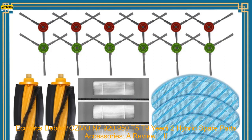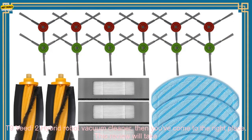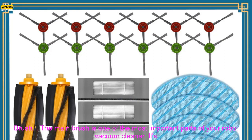Compatible for ECOVAX Deebot Osmo N79, N79S, 950T5, T9 YIDI 2 Hybrid Spare Parts Accessories - A review. If you're looking for a set of high-quality replacement parts for your ECOVAX Deebot Osmo N79, N79S, 950T5, T9 YIDI 2 Hybrid Robot Vacuum Cleaner, then you've come to the right place. This review will take a look at the different types of parts available, as well as their features and benefits.